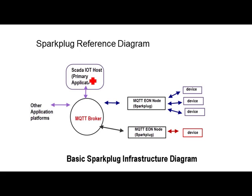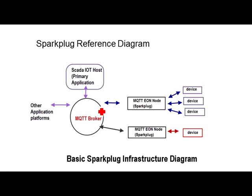We have a primary application — basically your control — which is going to control all your devices, receive data from them and display it. We can also have other applications receiving data from the broker. We have what we call edge-of-network nodes, which will have devices attached to them — typically polled devices, with a polling mechanism pulling data into the edge-of-network node. These nodes are Sparkplug compliant, sending data via MQTT to the primary application. We can also have edge-of-network nodes that understand MQTT themselves — essentially a device with MQTT built in, which are the newer type of devices.